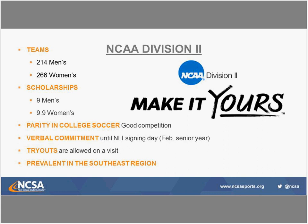Soccer is not like football or basketball — those are measurable-driven sports. In football, if you're 6-foot-2 and 320 pounds, you're a Division I recruit. But if you're 6-foot-10 and 250 pounds, you can't keep up with the rigors of a Division I football program. That's why Division I is always better than Division II in football and basketball. But soccer is a skill-based sport — coaches evaluate you on talent alone, and video is huge.